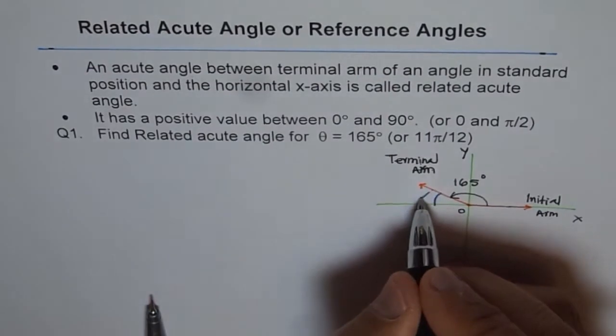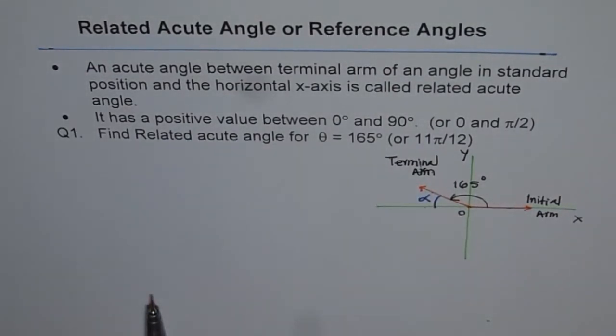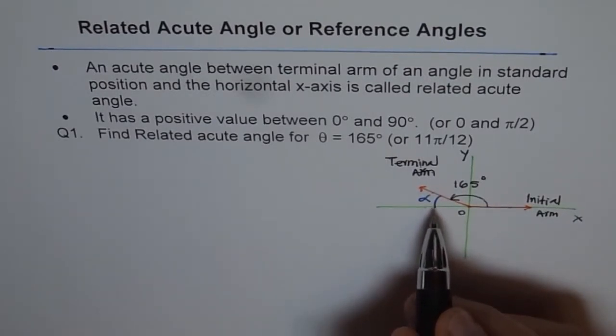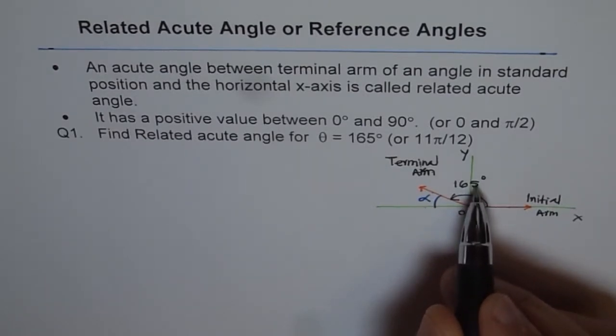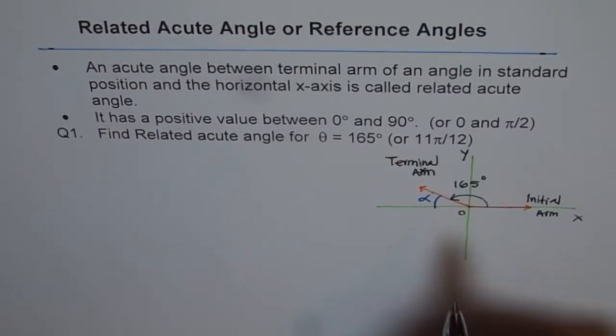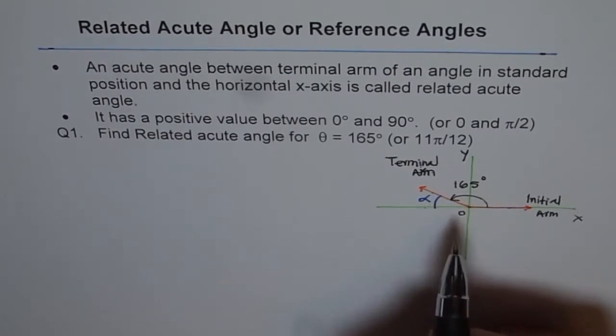So we normally write it with α. So that is the acute angle which we need to find. Why are we saying acute? Always the angle between terminal arm and the horizontal x is going to be less than 90 degrees or acute angle. I hope you understand the concept.